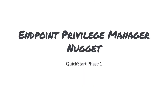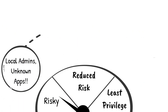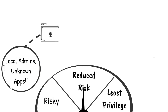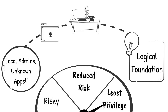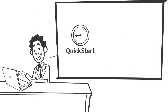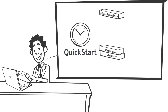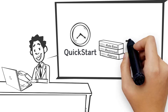This EPM nugget will introduce you to QuickStart and the first phase of its deployment. QuickStart is a set of starter policies which have been designed to immediately reduce risk without impacting the user experience, while also providing a logical foundation to build on. If you are well-versed in managing and maintaining EPM policies, then QuickStart is a great time-saver, and for those new to the field, it will also serve as an education on how to layer policy to achieve desirable outcomes.